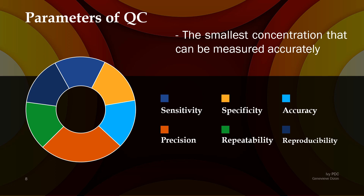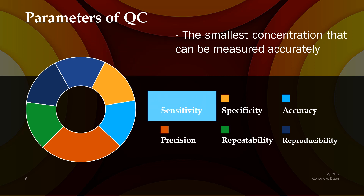Our third definition: the smallest concentration that can be measured accurately. We now have four choices left — sensitivity, specificity, repeatability, and reproducibility. Which one would be accurately measuring a test even at a very small concentration? The answer is sensitivity. When we say sensitivity, we are referring to the ability of the test to detect something even at a very minimal concentration. If the test has this ability, then the test is highly sensitive.